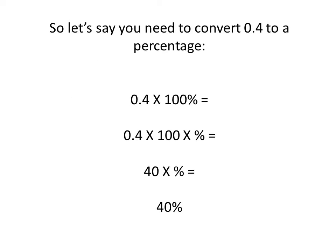Let's say you need to convert the number 0.4 to a percentage. The simple answer is you're going to multiply times one hundred percent. 0.4 times one hundred percent equals 0.4 times one hundred times the percent sign. We're going to leave it as the percent sign because we're converting to percent. So 0.4 times one hundred is forty, times the percent symbol, and our final answer is going to be forty percent.